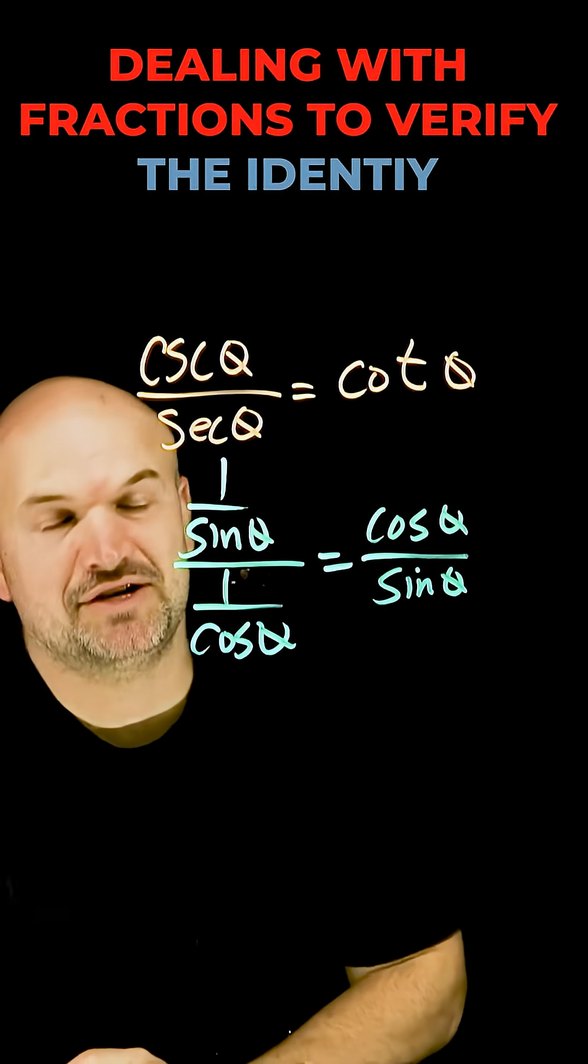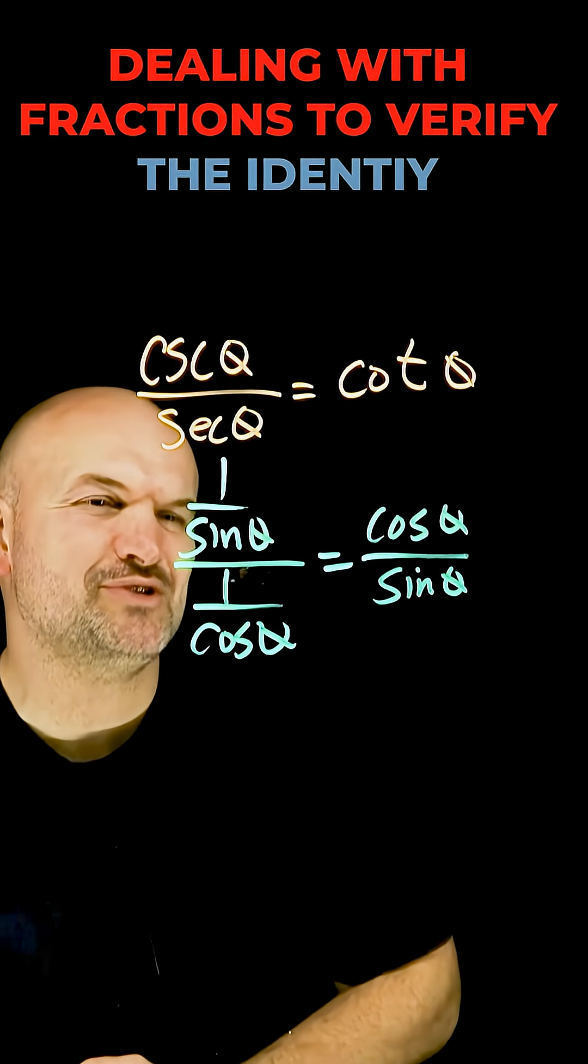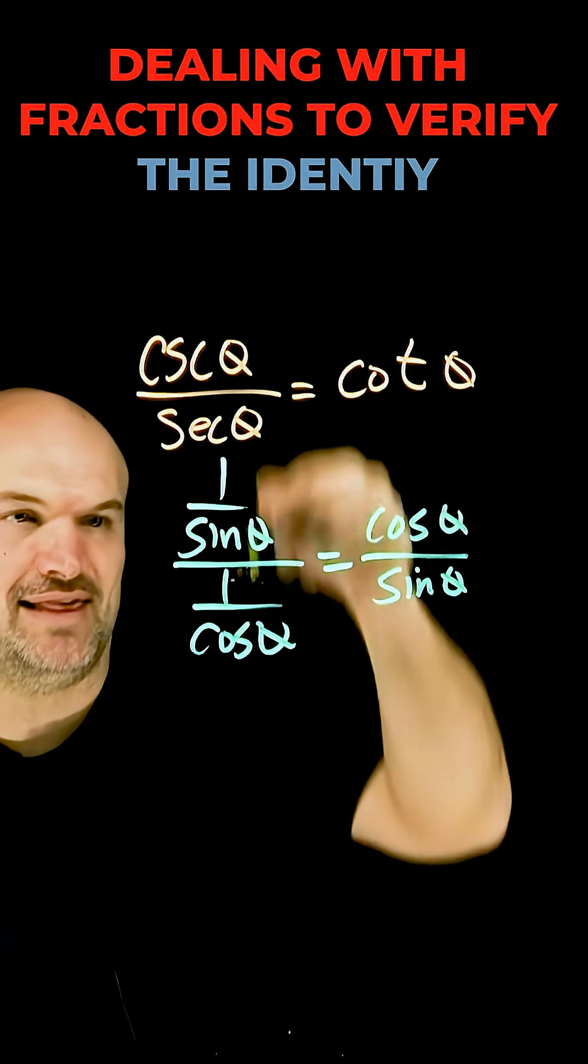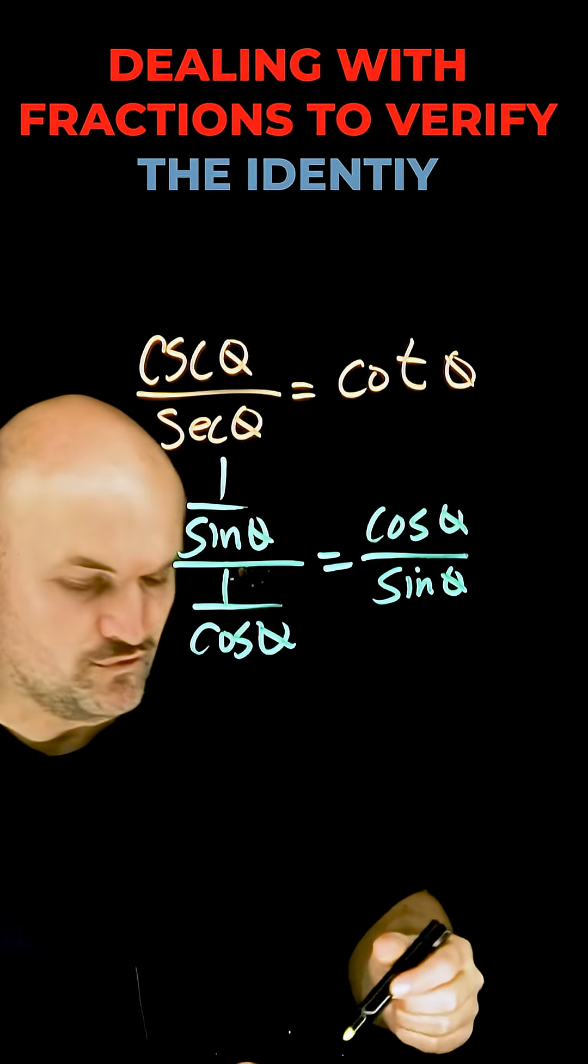The problem sometimes with that is it creates a lot of fractions and students usually do not like fractions. So what we have to do is, how are we going to take this and equal it over to that?